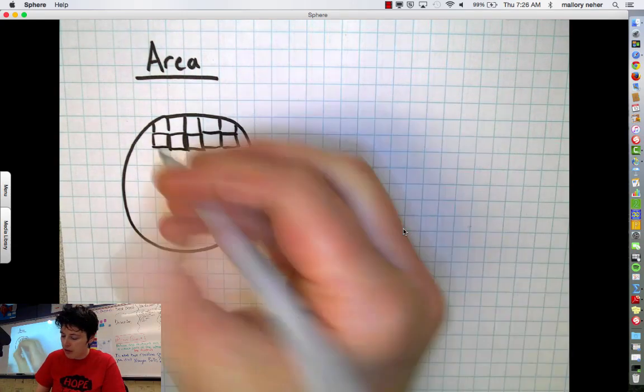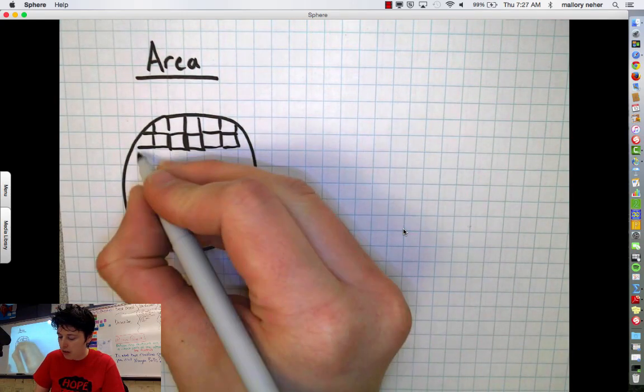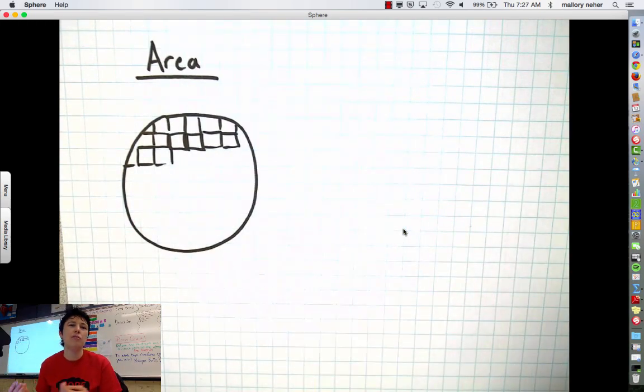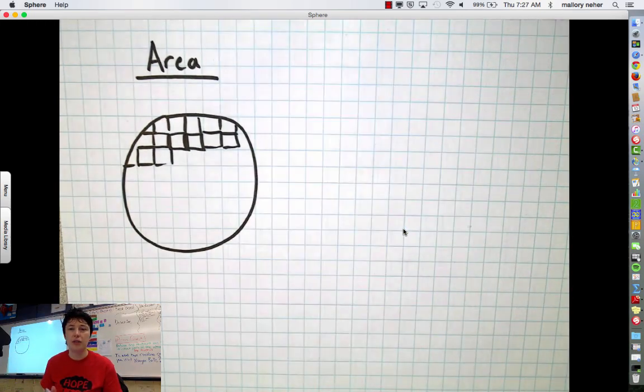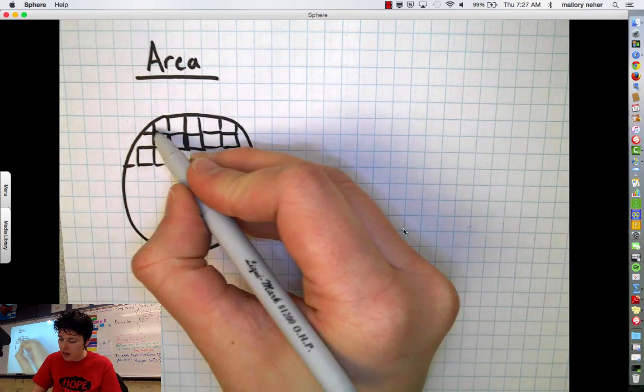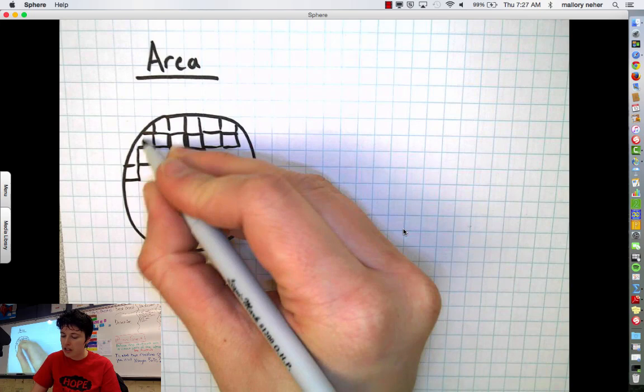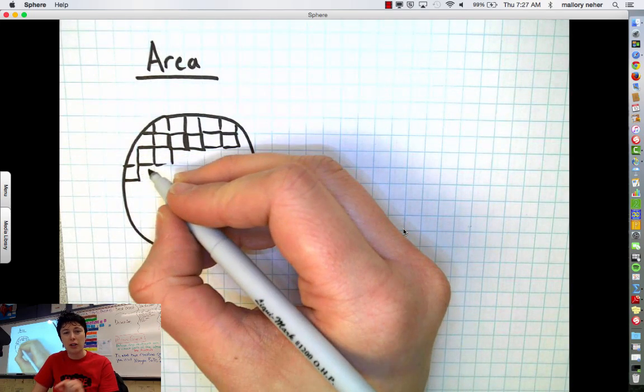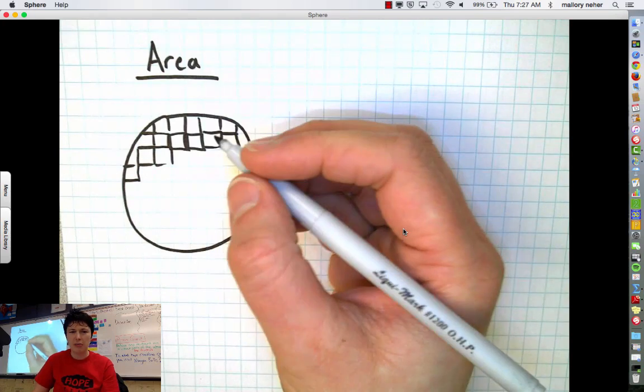And the strategy I'm using right now of drawing little tiny squares is not going to be a very convenient strategy. Nobody's going to want to sit when you have to find the area of a circle and draw little tiny square units. Especially when you're going to get around the edges here, where you're going to get all these partial little squares and you're going to have to estimate how many square units is in there. So it's kind of complicated.